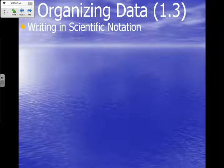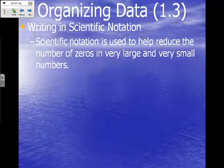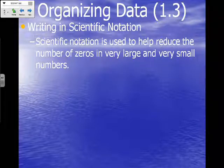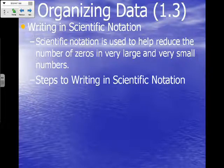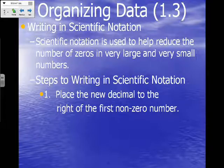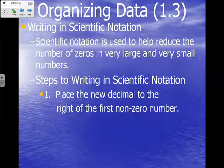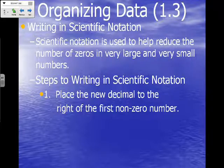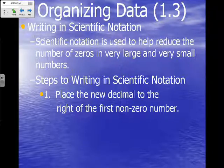Scientific notation is used to help reduce the number of zeros in very large and very small numbers. We're going to write our steps — you don't have blanks for these in your notes, so jot them down to the right side. Step one: place the new decimal to the right of the first non-zero number. These steps may not make sense right now, but we're going to use them in just a moment when we practice.